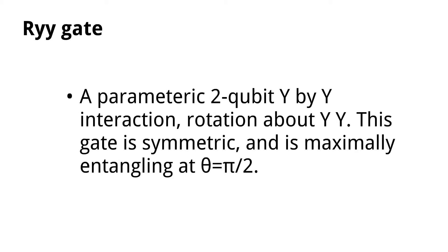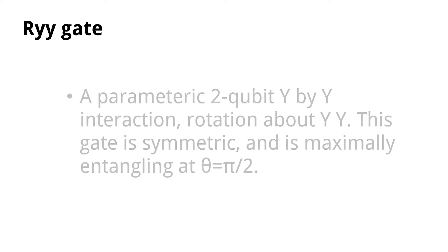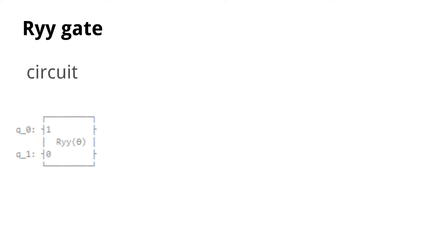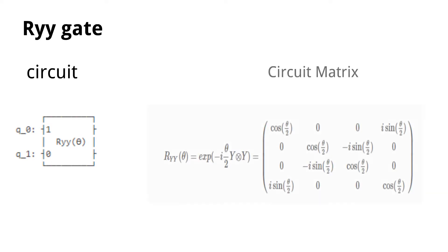Now let us move on to the next gate, that is the RYY gate. The RYY gate is a parametric two-qubit Y-by-Y interaction rotation about YY. This gate is symmetric and is maximally entangling at theta equals pi over 2. The circuit of the RYY gate is as given below, and its matrix is as given below.